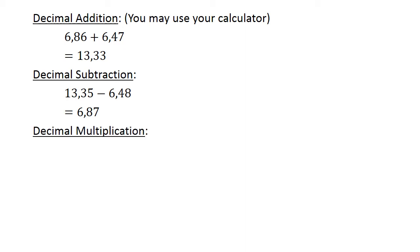Decimal multiplication. 0.39 times 0.02 equals 0.0078.